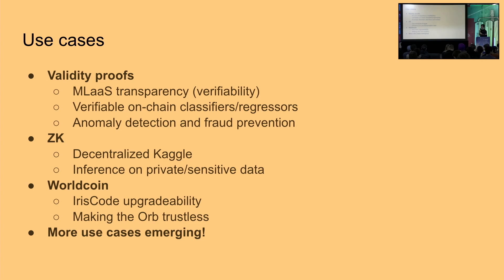Another use case is verifiable on-chain classifiers or regressors — verifying the result of a machine learning algorithm on-chain without performing the computation on-chain, since computation inside a distributed system like Ethereum is extremely expensive. You run it locally, create a proof locally, and put it on-chain. For example, you could predict the cost of housing — inputs like square meters, location, number of bathrooms — prove the result to a smart contract, and the smart contract could execute logic based on the result of the machine learning model.